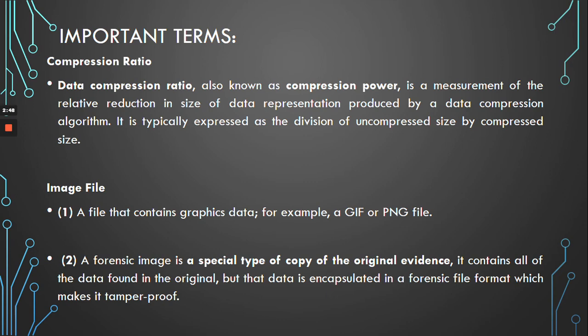We will also meet the term compression ratio. Compression ratio, known as the compression power, is a measurement of the relative reduction in size of data representation produced by a data compression algorithm. It is typically expressed as a division of the uncompressed size by the compressed size, and you would really want to have a higher compression ratio.